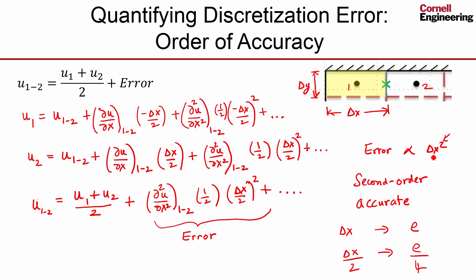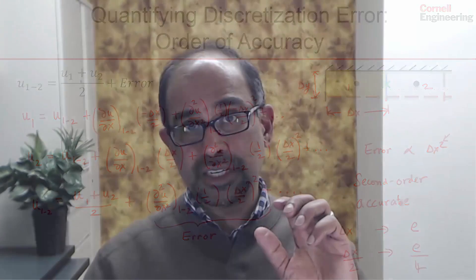Because it's second order accurate, so this is going to go down as delta x squared over 2, whereas for the first order accurate, the error would also go down only by a factor of two. So you can see the attractiveness of the second order scheme, that the error would go down much faster as a square of the grid spacing.